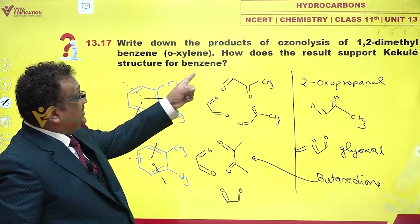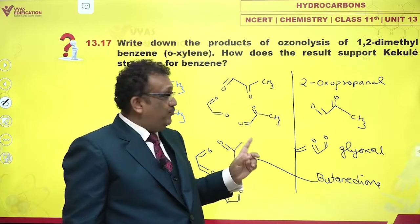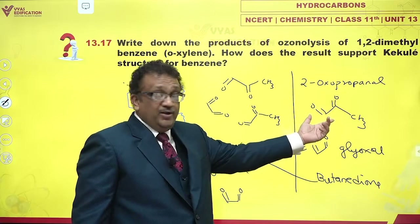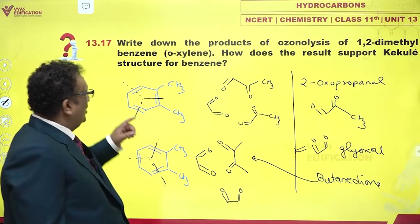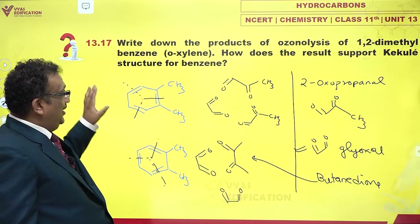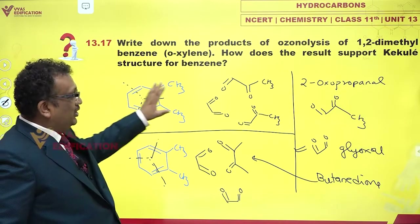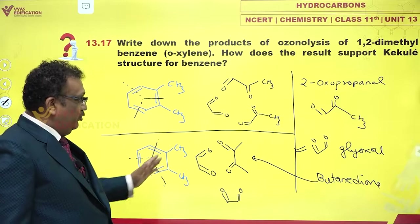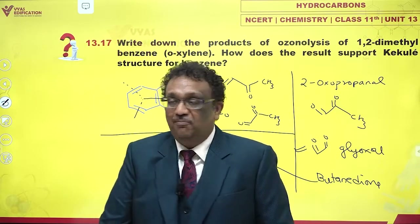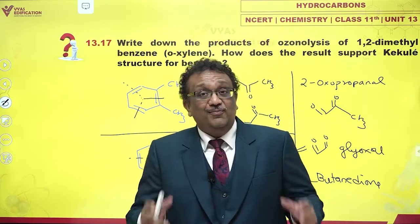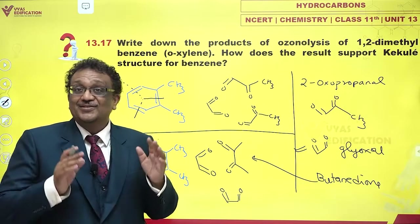Actually, when you ozonolize 1,2-dimethylbenzene or o-xylene, you obtain not two but three different products: you obtain glyoxal, you obtain 2-oxopropanal, and you also obtain butanedione. This is a kind of proof, because if you take the two Kekulé structures, each individual structure would give you only two products. But in actuality you obtain all three, which proves that both Kekulé structures must be valid and true — only then would you be able to obtain all three different products as ozonolysis products.